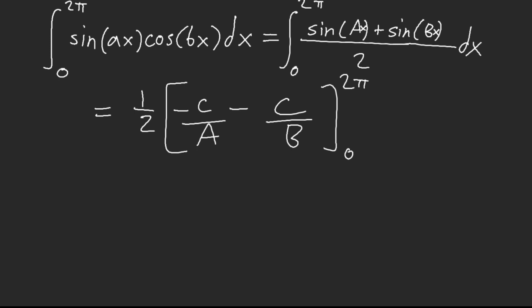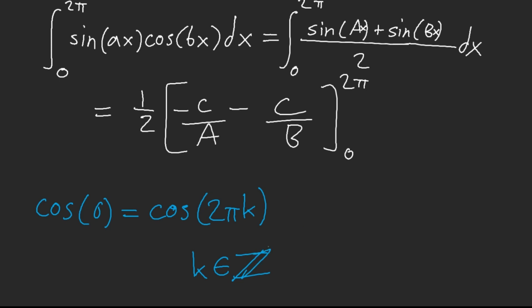Because of periodicity, understand that cosine(0) is equal to cosine(2π) times whatever integer — they both equal 1. So because the upper and lower bounds are equal when plugged in, they cancel each other out. Therefore, whatever a and b are, this integral is going to equal 0 because of periodicity.